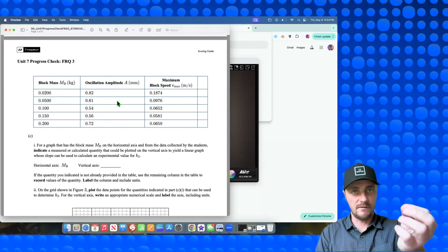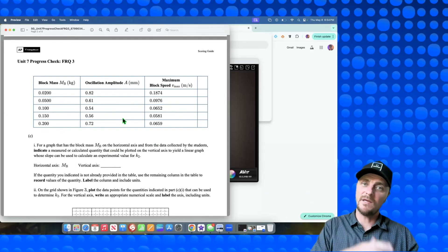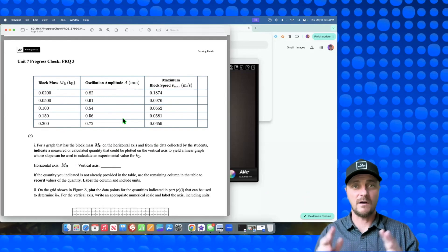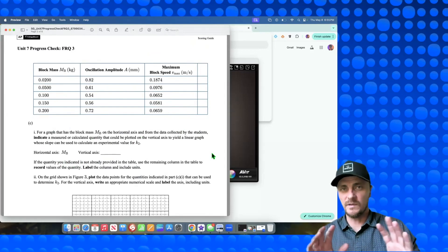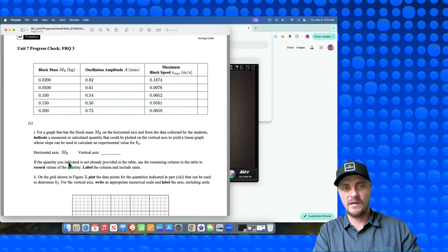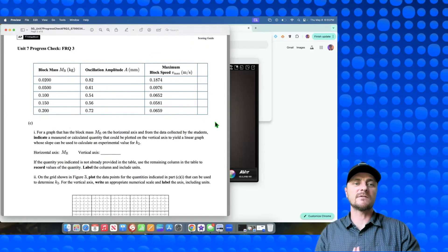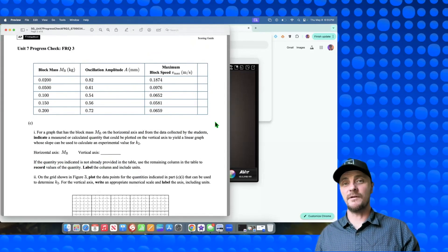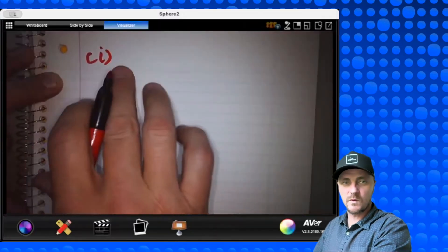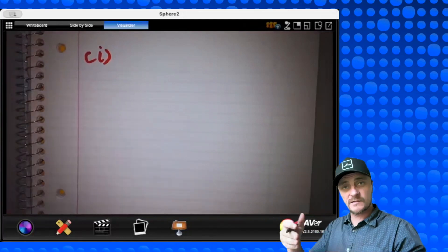Look at this. We have the velocity. We have the mass of the block. That's enough to find kinetic energy right there. And we have the amplitude. So when we're thinking about elastic potential energy, one-half K, the thing we're looking for, A squared, everything is covered except K, which we can get from the slope of our graph. So to actually get C1 done, we're going to develop this equation first, and then we're going to do this part, which said, if the quantity you indicated is not already provided in the table, we'll use the remaining column in the table to record values of the quantity, label the column, and include units.